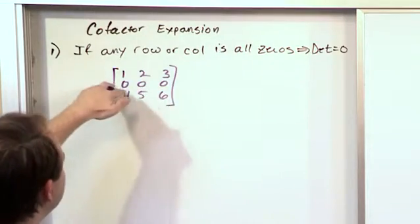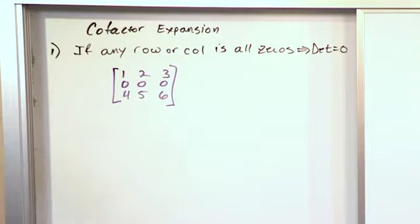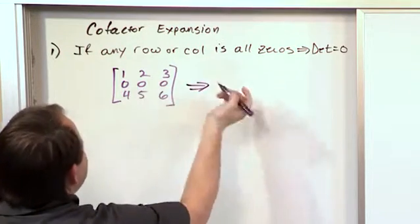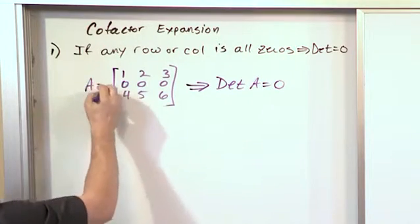So if you ever see zeros in any column or any row, you could always expand the determinant about that column or that row. And because of that, you don't even have to calculate anything. You can always see that the determinant is equal to zero. This is matrix A.